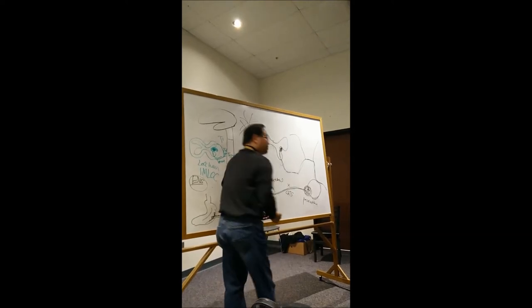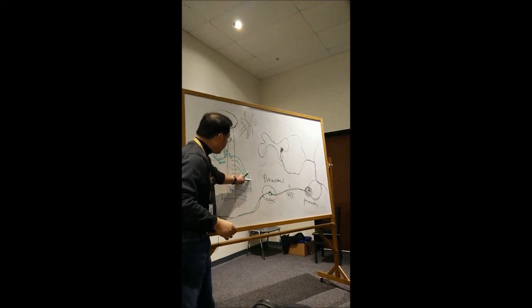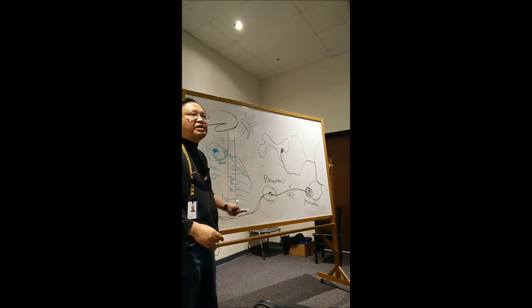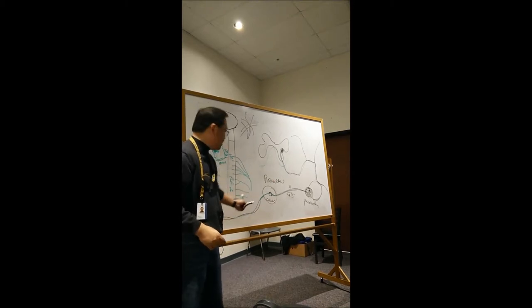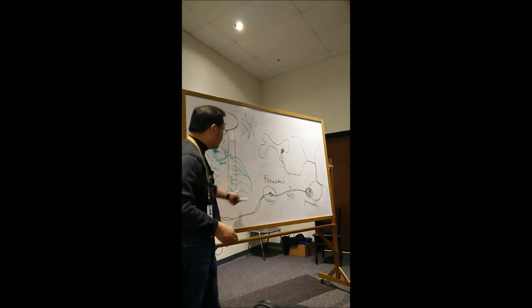Splanchnic or greater thoracic splanchnic? Right in here, you have greater thoracic. If it's T10 to 11, it is lesser. T12 is least. If it's L1, it's lumbar. And if it's L2, it's lumbar.